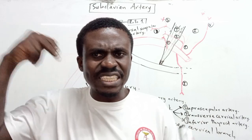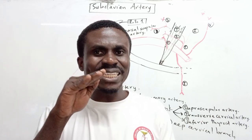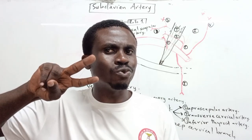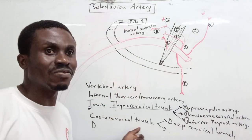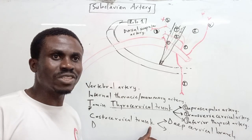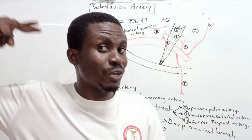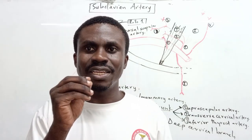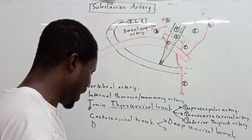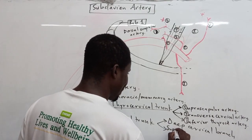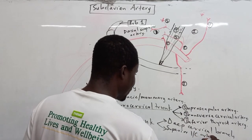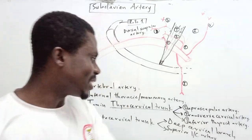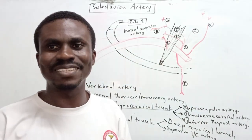The other branch from the costocervical trunk supplies the first two posterior intercostal spaces. We have eleven posterior intercostal spaces — most of the posterior intercostal arteries come from the descending thoracic aorta, but the first two come from the costocervical trunk as the highest, supreme, or superior intercostal artery.